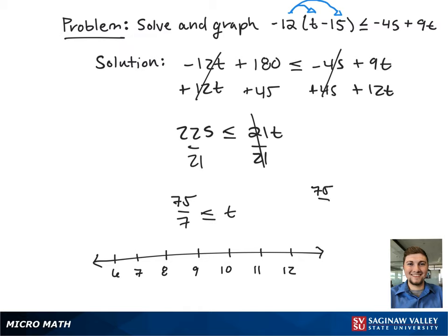75 over 7 is approximately 10.71. On the number line this looks like a closed circle, since t is greater than or equal to 75 over 7, going right towards infinity. In interval notation this looks like a closed bracket from 75 over 7 to infinity with an open bracket.